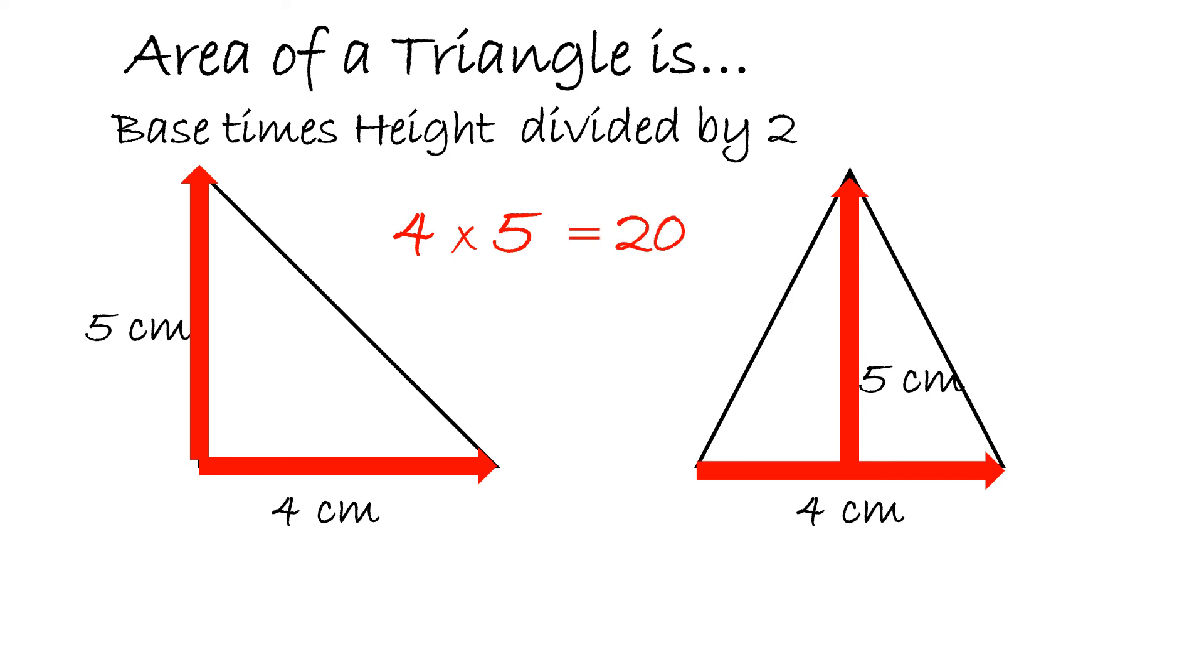Then we divide it by 2. 20 divided by 2 will equal 10 centimeters squared. That is the area of both of these triangles.